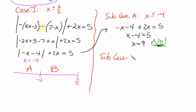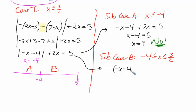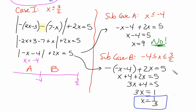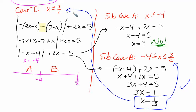For subcase b, x is greater than or equal to negative 4 but less than or equal to 3/2. With x equals 0 as an example, inside the absolute value is negative. To remove the absolute values, we change the sign — put parentheses and throw a negative out front — plus 2x equals 5. Distributing and solving, we get x equals 1/3. Checking: 1/3 falls in the subcase, and it falls in the original case as well. So x equals 1/3 is a solution.